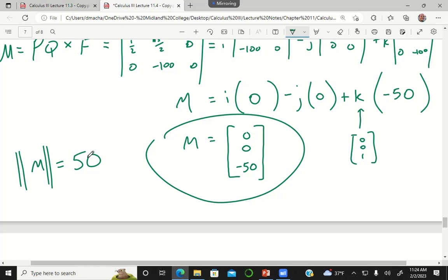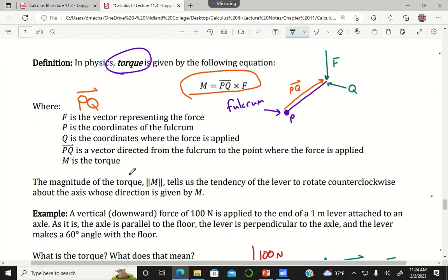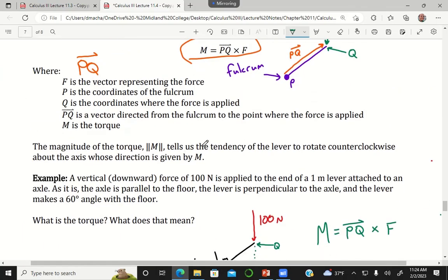So what does that mean in terms of torque? This magnitude, which was 50, tells us the tendency of the lever to rotate counterclockwise about the axis whose direction is given by M.